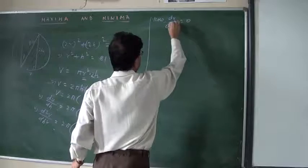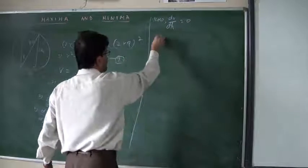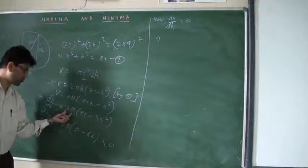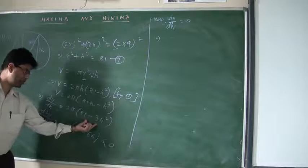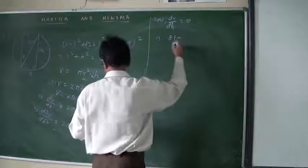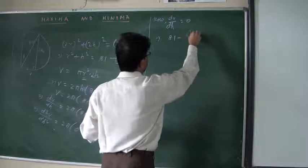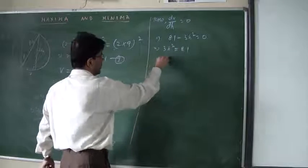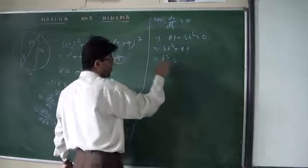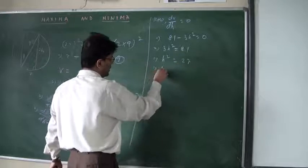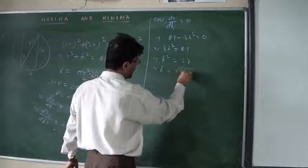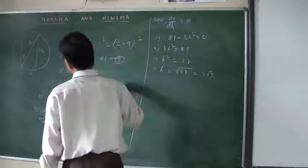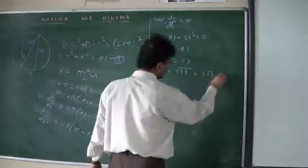Now, setting dV/dh = 0 implies 2π(81 − 3h²) = 0. Since 2π cannot be 0, we need 81 − 3h² = 0, which gives 3h² = 81, so h² = 27. Therefore h = √27 = 3√3. The unit was given, so this will be centimeters: h = 3√3 cm.